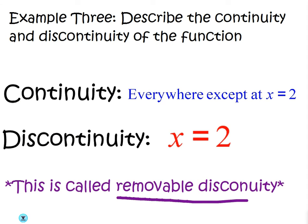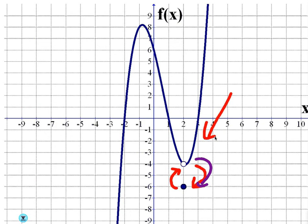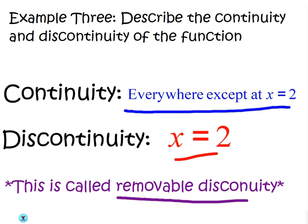So notice this graph is continuous everywhere except at x equals 2. The only point that it's discontinuous is at that hole at x equals 2.